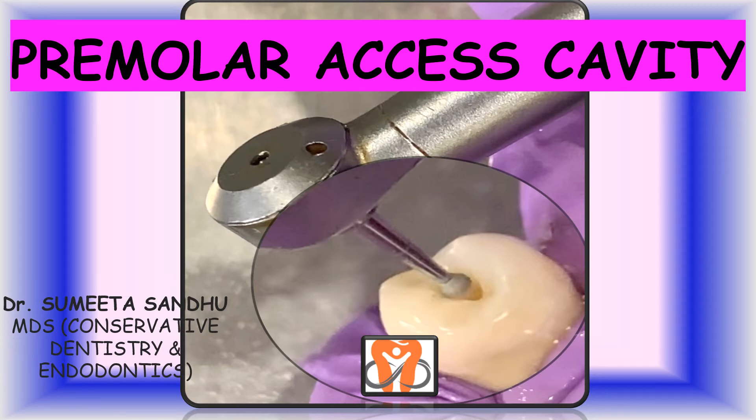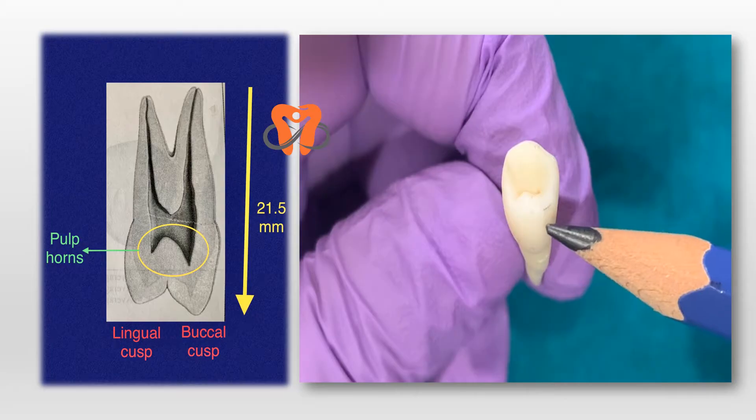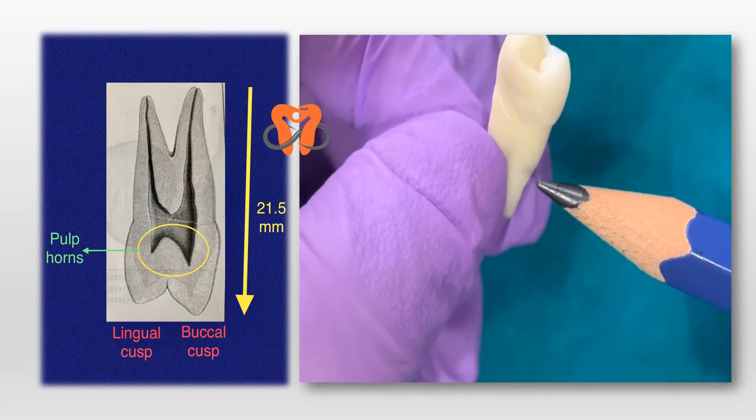Hello everybody, welcome to Brainy Dental. This video is a tutorial on access cavity preparation of maxillary premolar. Let's go ahead and watch. This is maxillary first premolar. It has two cusps, buccal and lingual, and it is bi-rooted having two roots. Its length is roughly 21.5 millimeters.